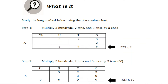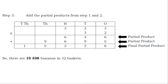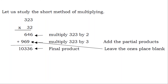Study the long method below using the place value chart. Step 1: Multiply three hundreds, two tens, and three ones by two ones. Step 2: Multiply three hundreds, two tens, and three ones by three tens (30). Step 3: Add the partial products from Step 1 and Step 2. So there are 10,336 bananas in 32 baskets.